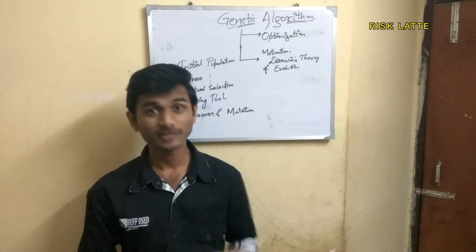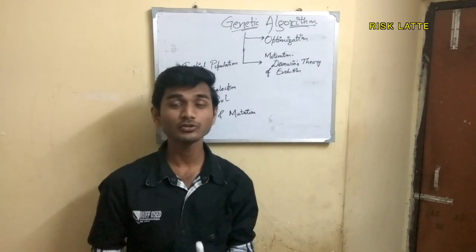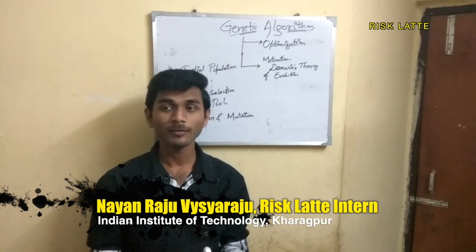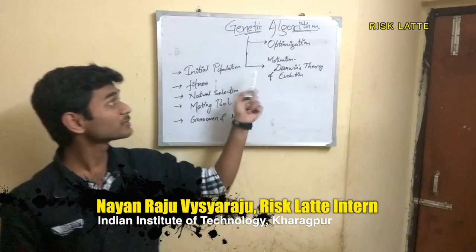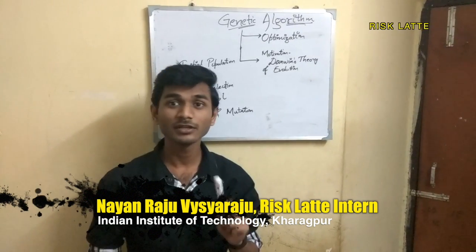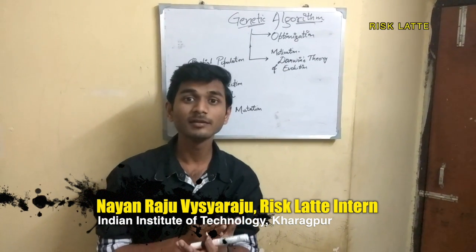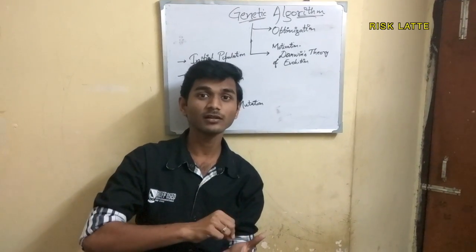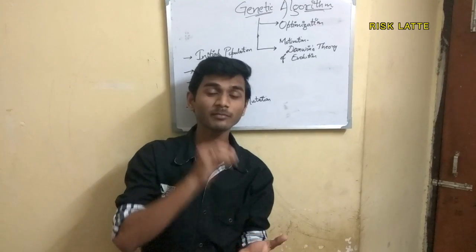What is Genetic algorithm? Genetic algorithm is basically an optimization technique which is used to find maximum or minimum of a given problem. It may be constrained or unconstrained, and mainly its motivation is from Darwin's theory of evolution. In Darwin's theory, the best fit individual is picked up for the next generation and the characteristics of the best individual are inherited by the next generation.